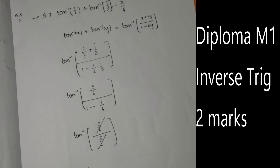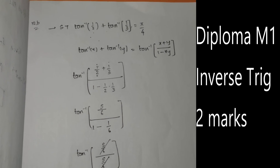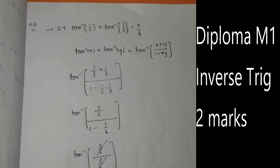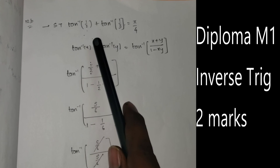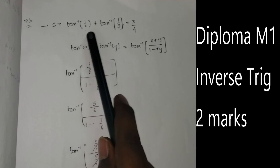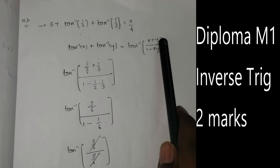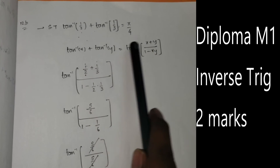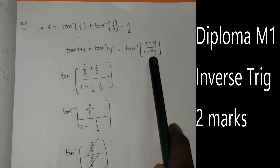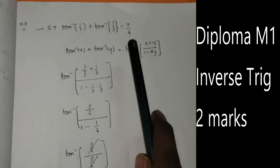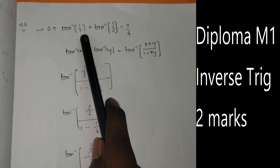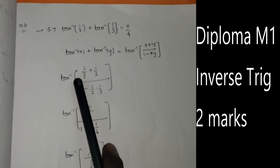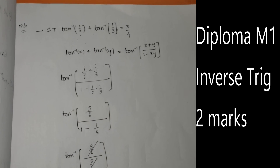Let's recap the solution. The formula is tan⁻¹(x) plus tan⁻¹(y) equals tan⁻¹ of (x plus y) by (1 minus xy). Here x is 1/2 and y is 1/3. Substituting, 1 minus xy gives the denominator, and the result simplifies to tan⁻¹(1) which equals π/4.